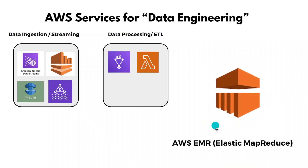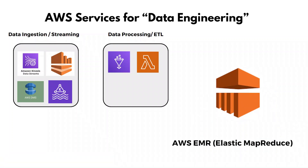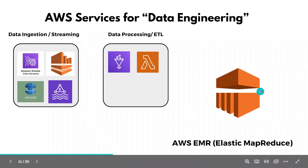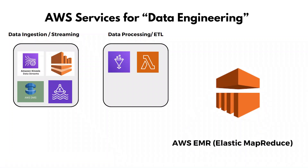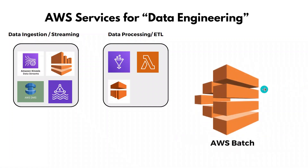Another tool used for data processing — especially for big data — is AWS EMR (Elastic MapReduce). EMR lets you process huge data workloads using Spark, which is a very well-known open-source data processing tool used by data engineers, data scientists, and ML engineers. Amazon EMR lets you quickly set up a Spark cluster and run workloads to process huge amounts of data efficiently.